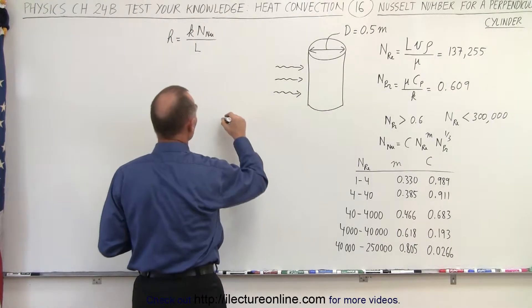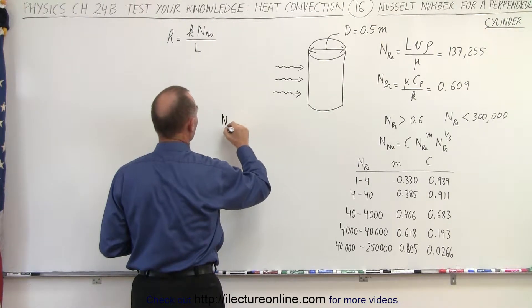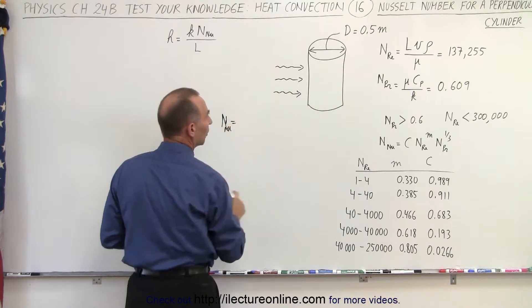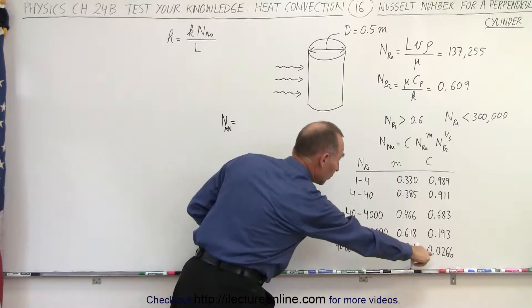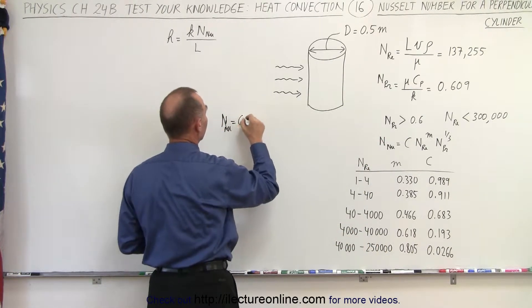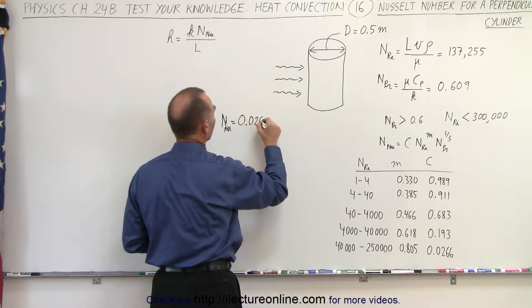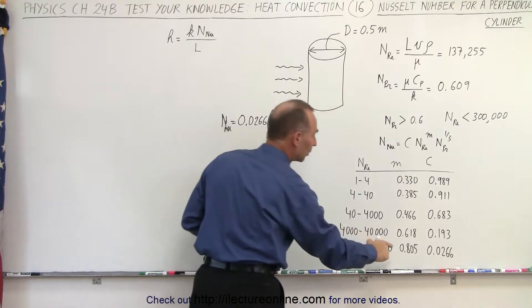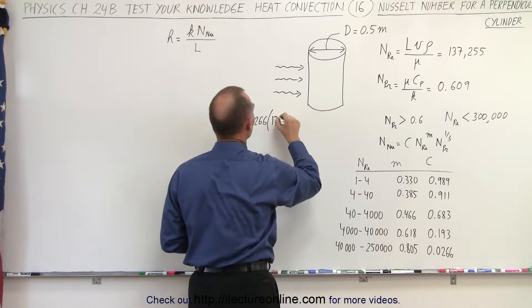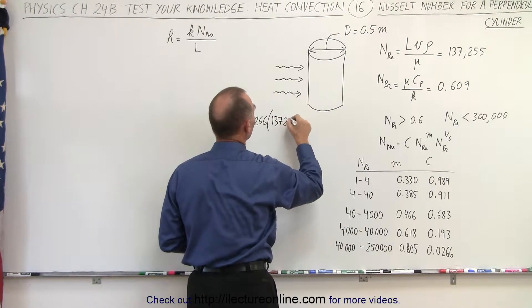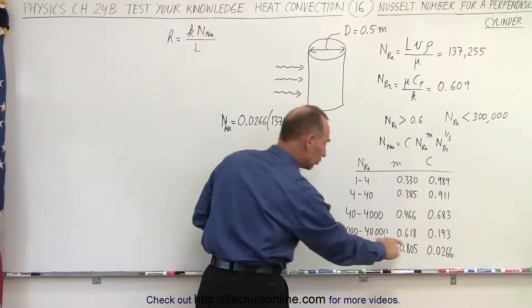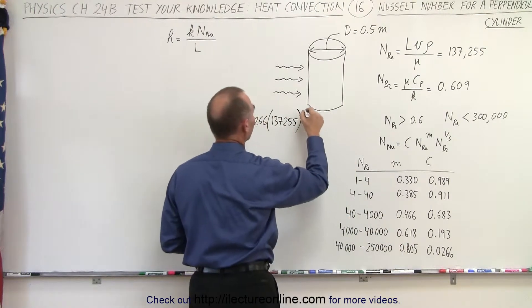So in calculating the Nusselt number, that's going to be equal to the constant, which is going to be 0.0266, multiply times the Reynolds number, the Reynolds number we said was going to be 137,255, raised to the exponent of 0.805.